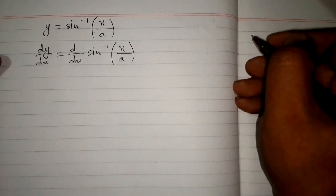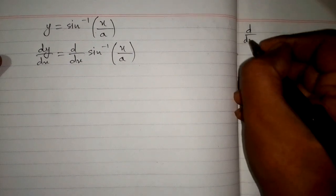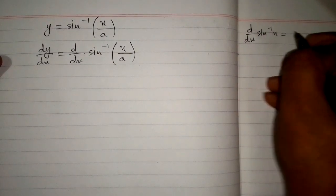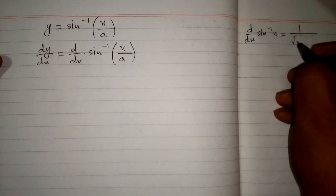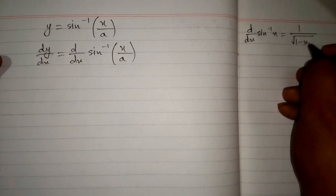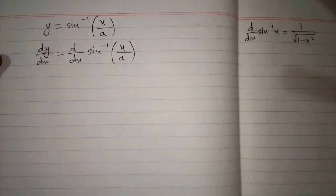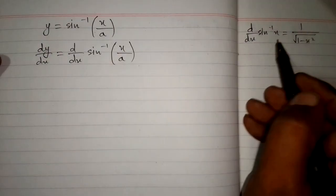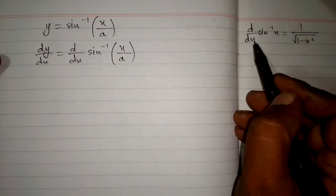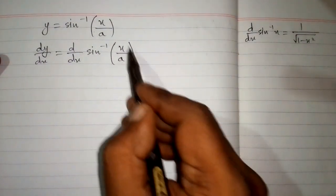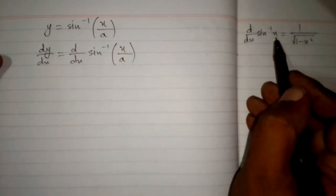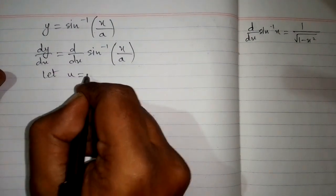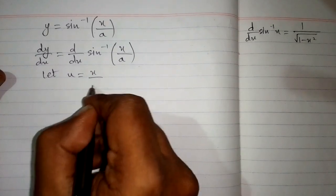Now we know that the derivative of inverse sine of x is equal to 1 upon square root of 1 minus x square. So in order to apply this formula, this variable and this variable must be the same, and we can see that we have x upon a in place of x. So let u is equal to x upon a.